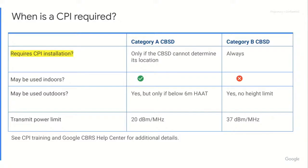CAT A is limited to 6 meters height above average terrain. Don't worry — the SAS does that calculation. So if you try to register a CAT A above 6 meters HAAT, height above average terrain, it will be rejected by the SAS. That's the main difference between a CAT A and a CAT B outdoors — that 6-meter figure.